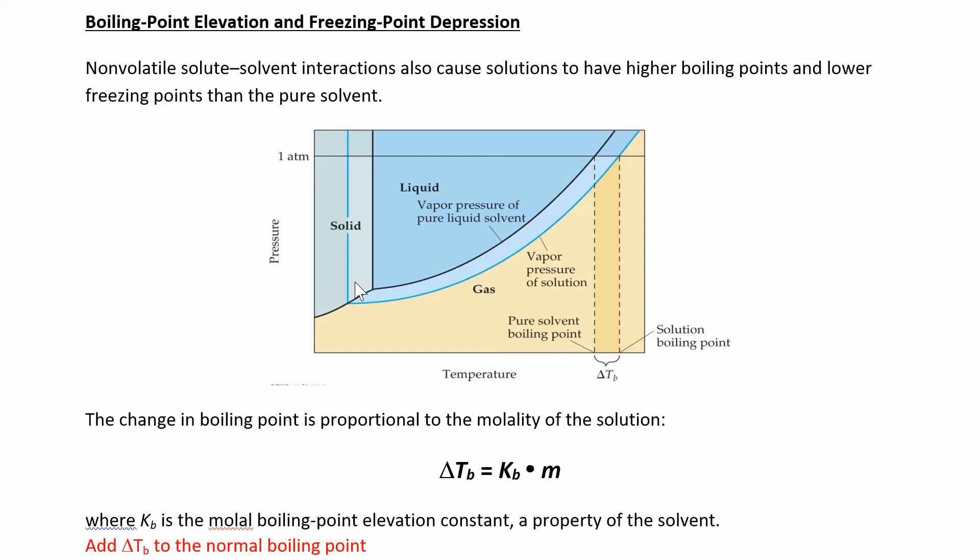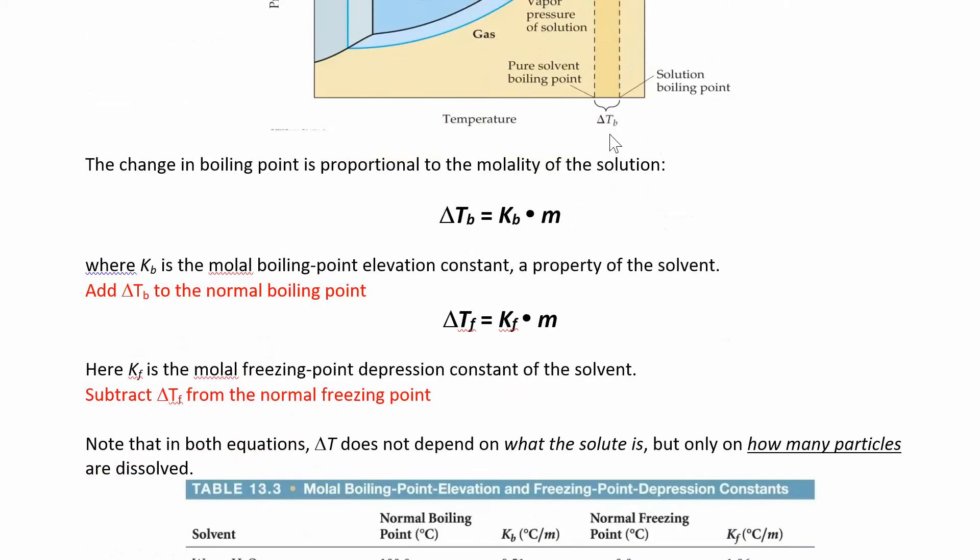Freezing point depression is going to be over here. What we're going to do is measure the change in the freezing point, change in the boiling point, that delta Tb. That's just the change. It doesn't mean that's the new boiling point or new freezing point. In order to find the new boiling point, if it's water you're going to take whatever this delta Tb is and add it to 100.